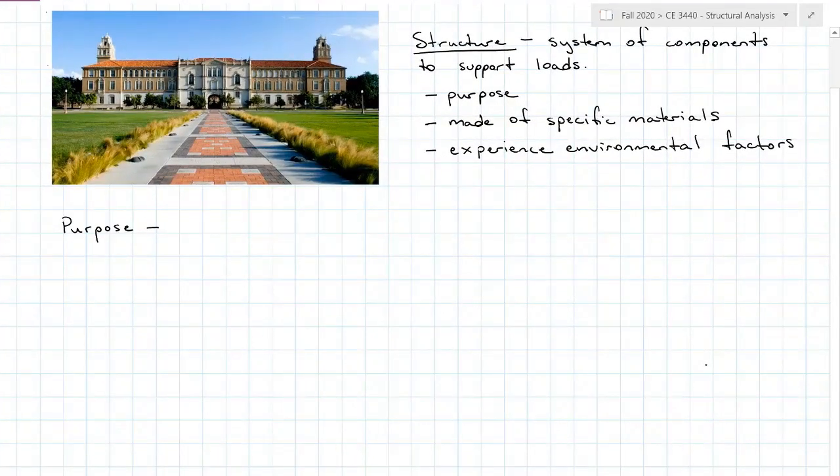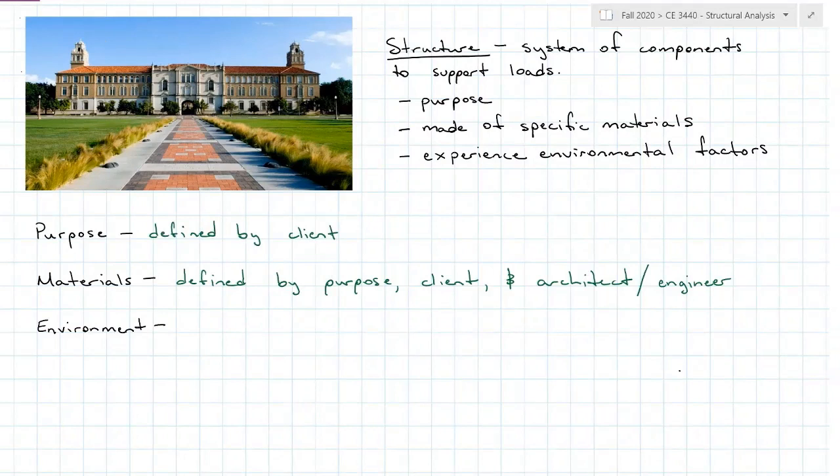The purpose of the structure is generally defined by the client. The materials used are going to be defined by the purpose of the building and somewhat by the client, and lastly by the architect and the aesthetics required for the purpose of the structure. The environment is defined by the location of the structure.